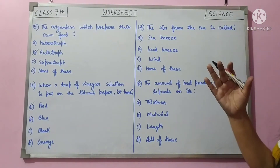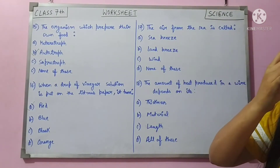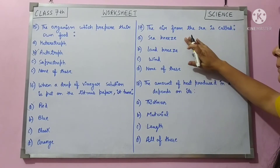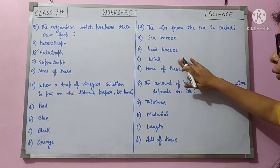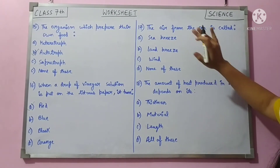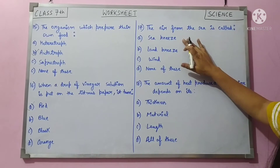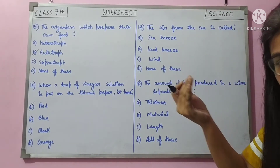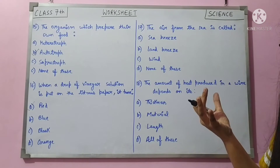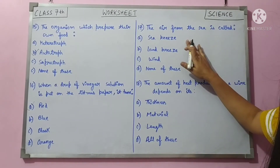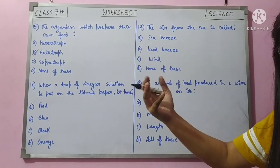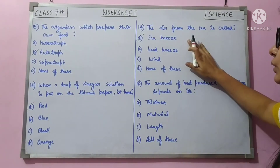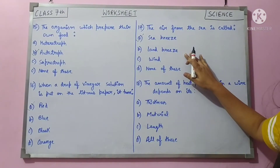Question 17: air from the sea — when air comes from the sea towards us, we call it sea breeze. When it goes from land towards the sea, it is called land breeze. Sea breeze occurs during the day; land breeze occurs at night. Answer is A — sea breeze.